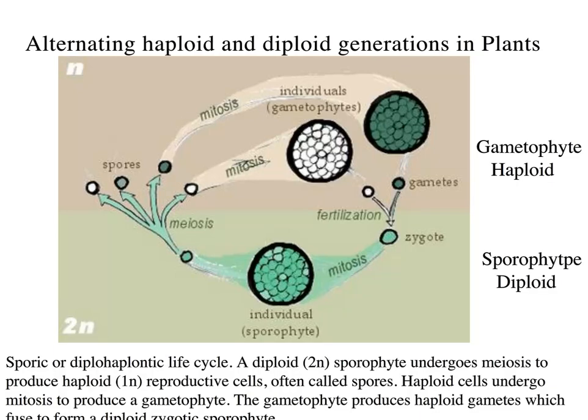Plants do this amazing thing called alternation of generations, meaning they have a haploid stage of life and a diploid stage of life. In plants, the gametophyte stage is haploid — meaning that stage has one set of chromosomes. The sporophyte stage is diploid, meaning this stage has two copies of each chromosome. This is an evolutionary strategy necessary for plants that reproduce sexually — they get one set of chromosomes from mom and one from dad, coming together to form the diploid stage.